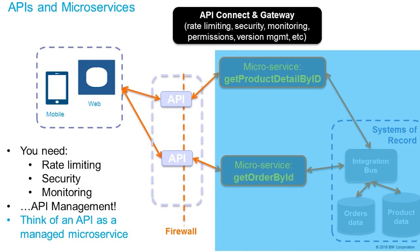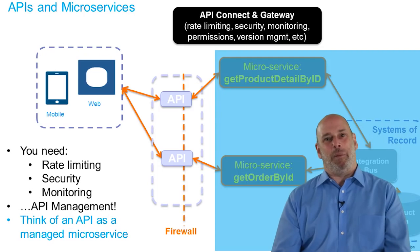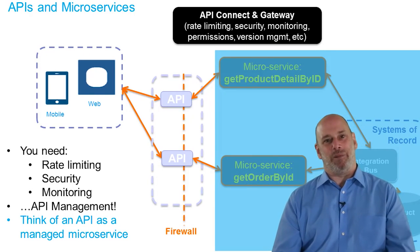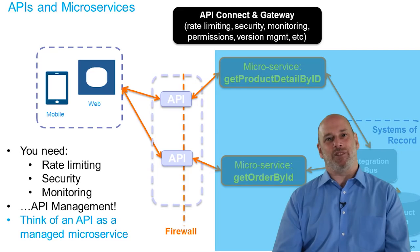It gives us control and availability for systems of record while giving us the speed, consumption, and security we want from an API layer. Think of an API as a managed microservice, and you're good to go for bringing these things to market. Hopefully that helped answer this question once and for all — I'll be pointing people to this video so they can see the positioning of APIs, services, and microservices. Thanks.